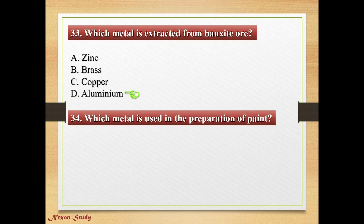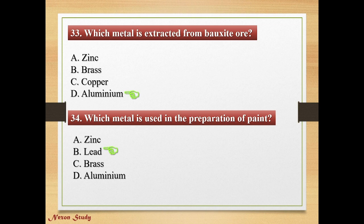Question: Which metal is used in the preparation of paint? Options: zinc, lead, brass, aluminum. Correct answer is lead.